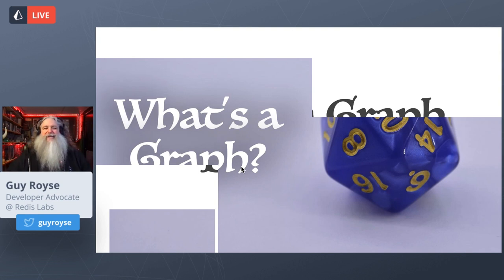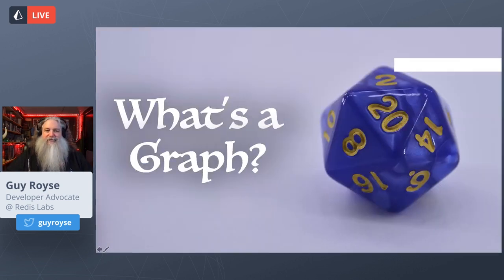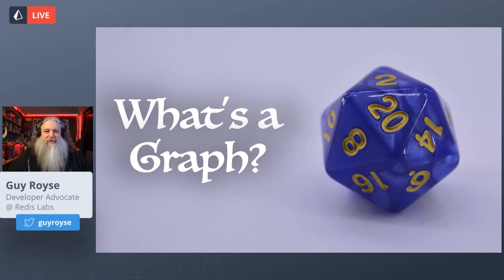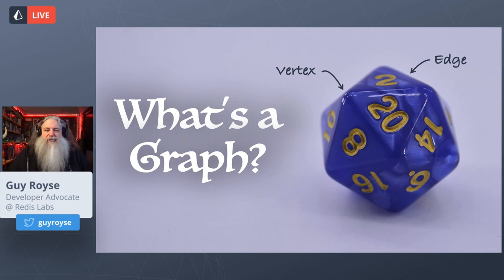A graph is a mathematical thing — it's a series of nodes connected by edges. This 20-sided die is essentially a graph: you've got a vertex or node representing each point on the die, and you've got edges — the relationships between those vertices. They don't have to just represent geometric shapes; they can represent all sorts of structures like family relationships, social networks, logistics, and lots of other ideas.